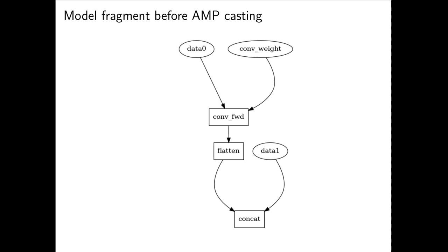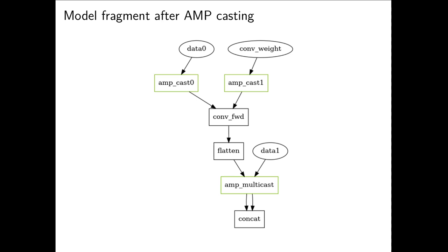Here on a small model fragment I can show you how AMP casting works. We have three operations and three variables. We have convolution operation which is in FP16 funx list, a flatten operation which is in FP16 FP32 list, and concatenate operation which is in widest type cast list. According to those lists, both inputs to convolution are cast to FP16 using AMP cast operations. Nothing specific is done for flatten operation. And inputs to concatenate operation are passed through AMP multicast, which ensures those inputs are of the same type and that they are cast to widest type.